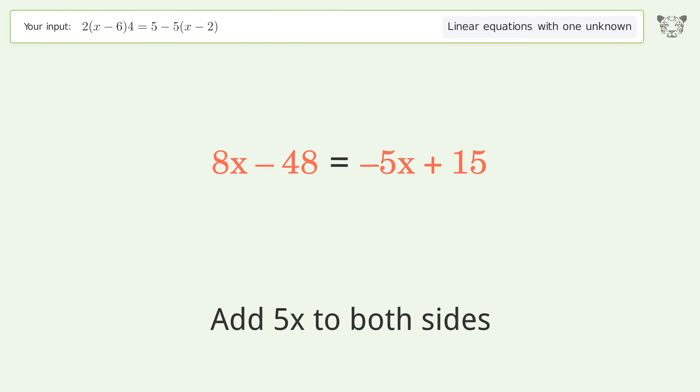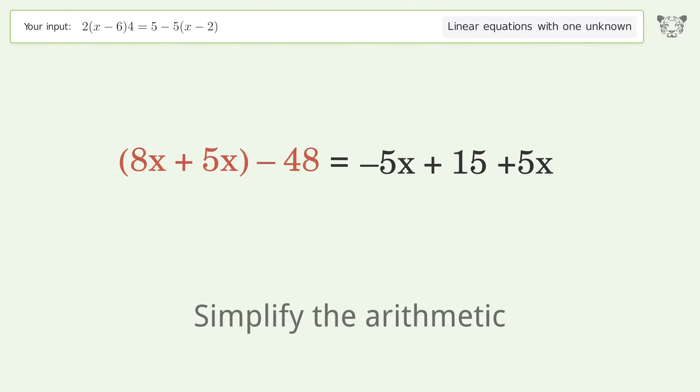Add 5x to both sides. Group like terms. Simplify the arithmetic. Group like terms.